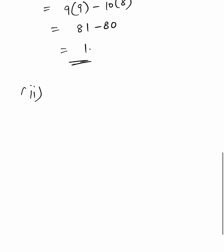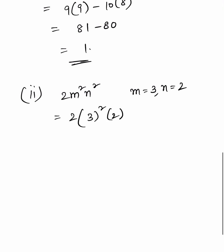Second bit: 2m square n square. Substituting m equals 3 and n equals 2, this is 2 into 3 square into 2 square, equals 2 into 9 into 4, equals 72.